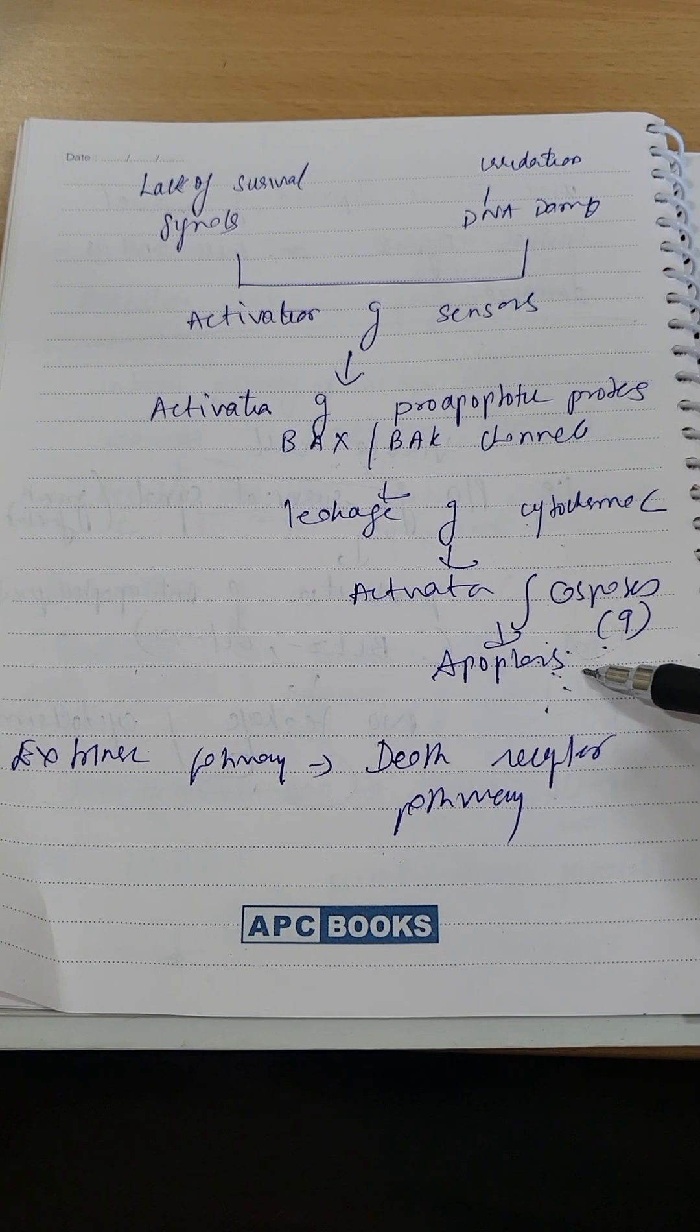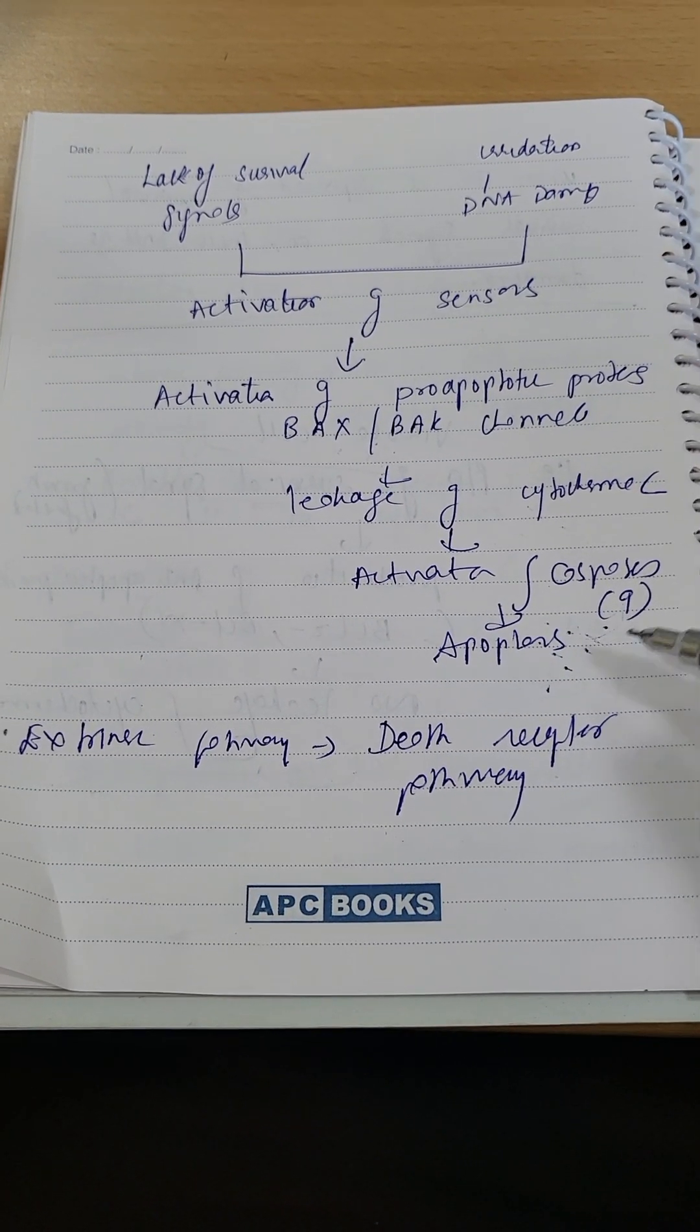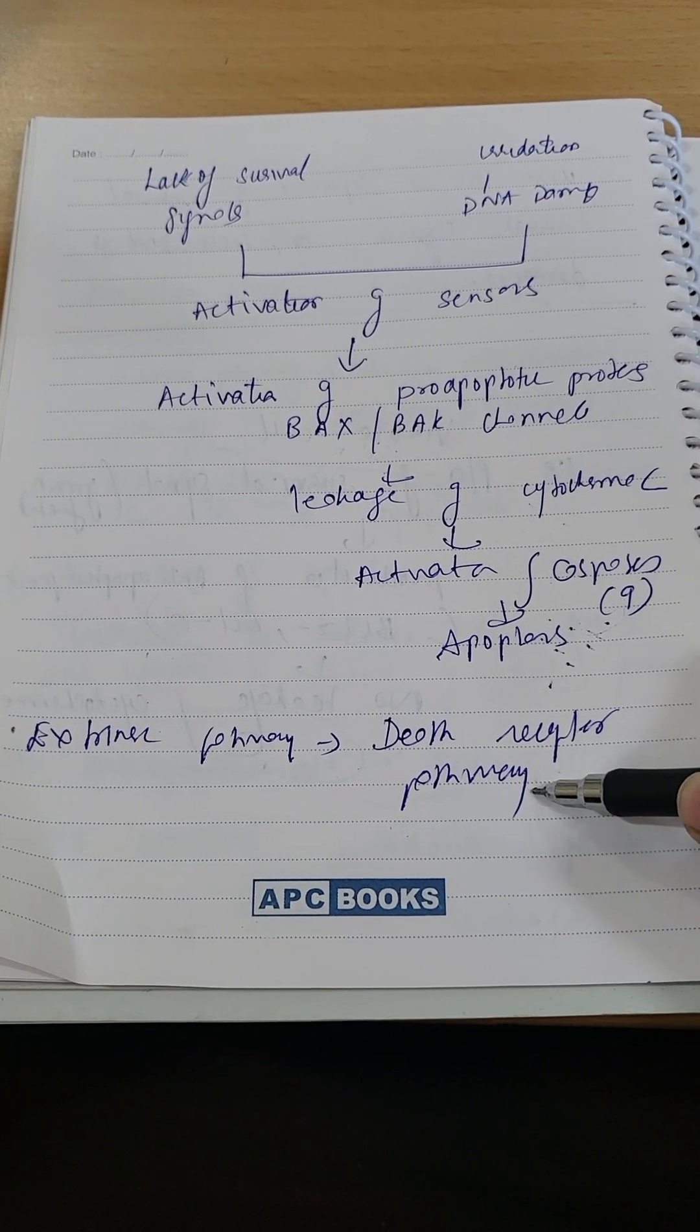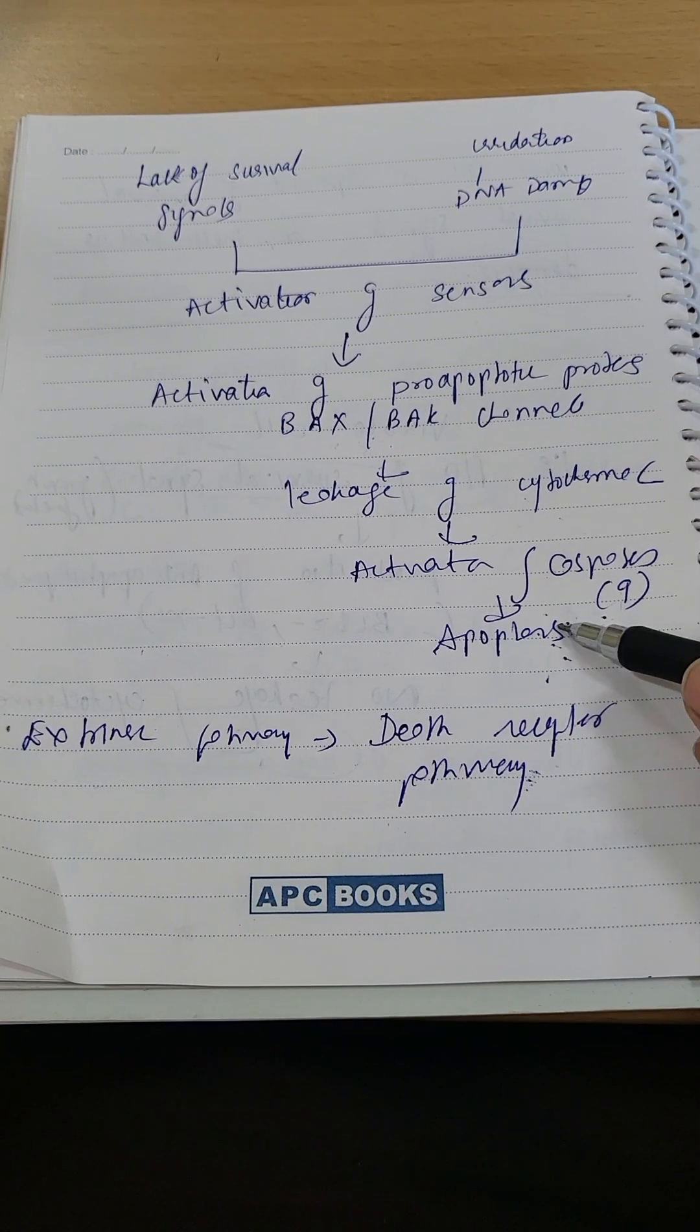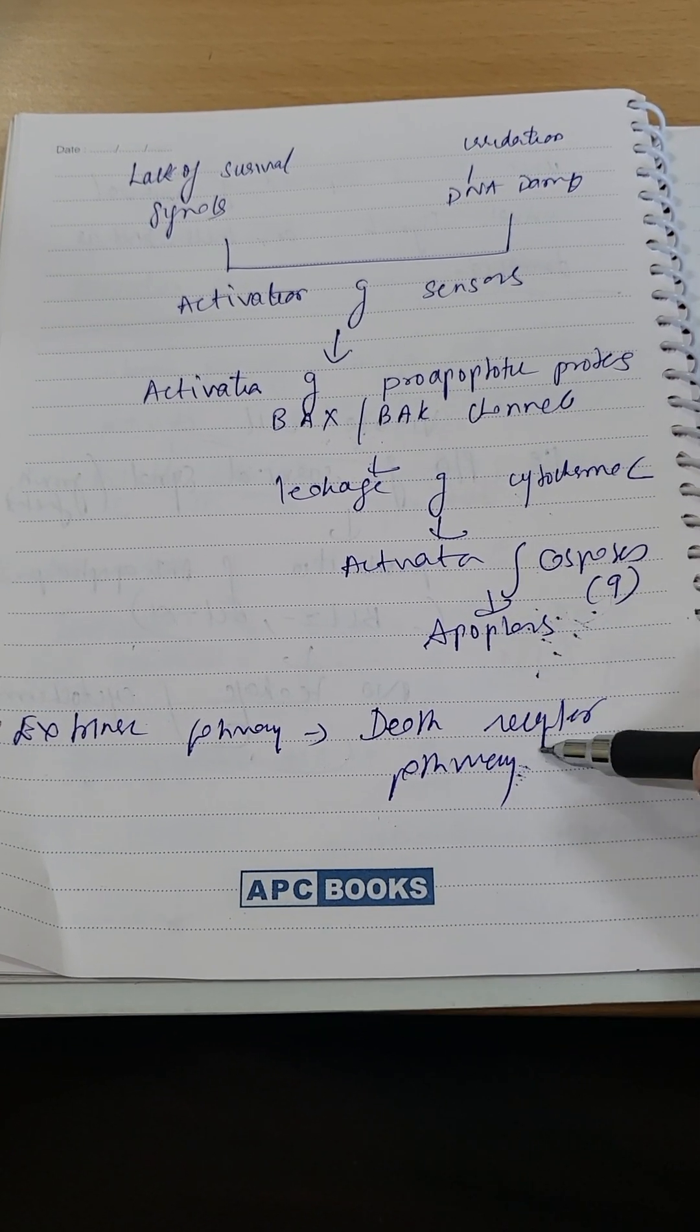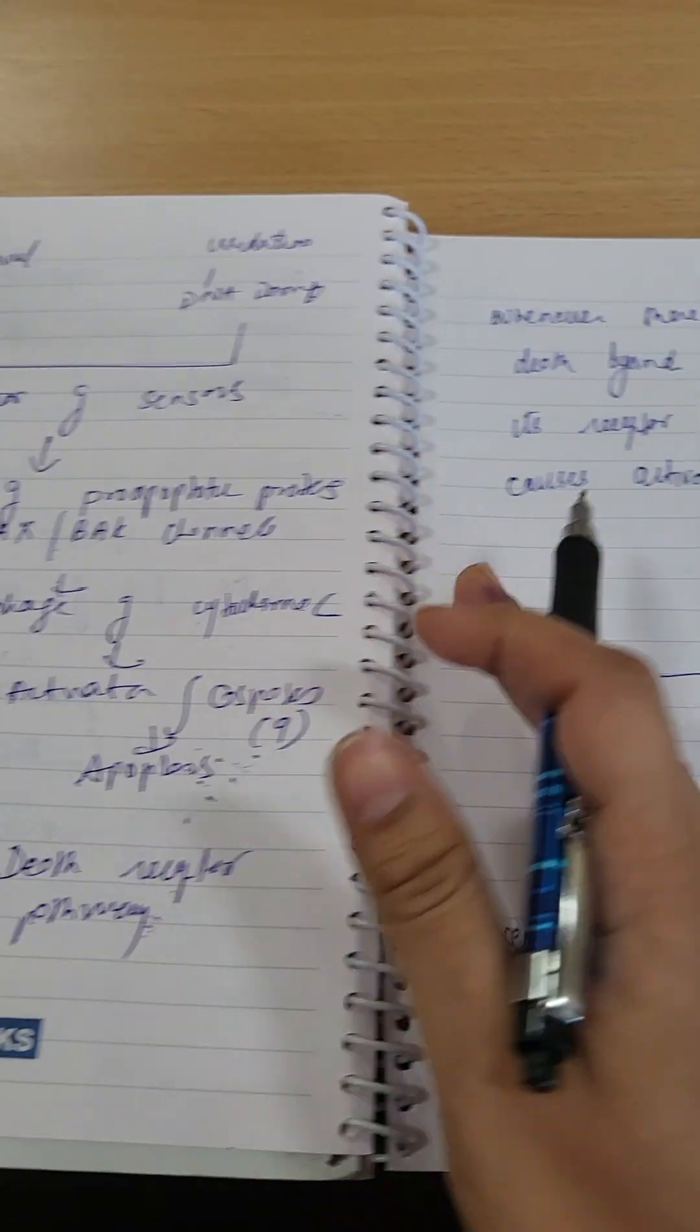Both caspases are activated, but intrinsic is caspase 9. Now let's talk about extrinsic. Extrinsic is caspase 8. We also call this death receptor pathway.